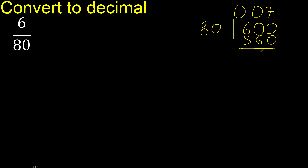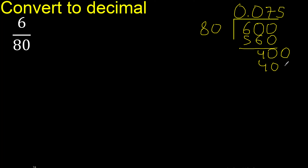Subtract: 600 minus 560 is 40. There is no number that goes down, therefore complete — always complete with 0. 400. 80 multiplied by 5 is 400; subtract is 0.